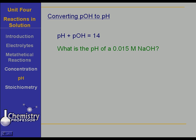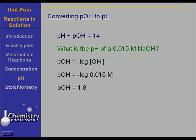What is the pH of a 0.015 molar sodium hydroxide solution? My suggestion would be to find the pOH first. The pOH — the negative log of the concentration of the hydroxide ion — is the negative log of 0.015 molar, which turns out to be 1.8. The pH plus the pOH is 14, so the pH plus 1.8 is 14, meaning the pH is 12.2. That sounds more like what you're used to hearing for a solution that's pretty strongly basic.